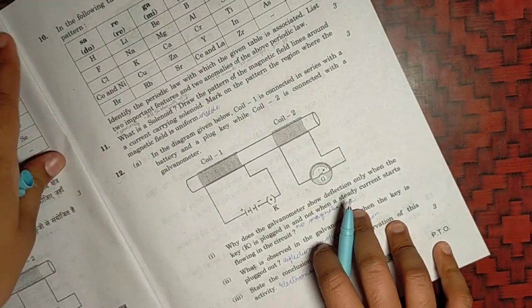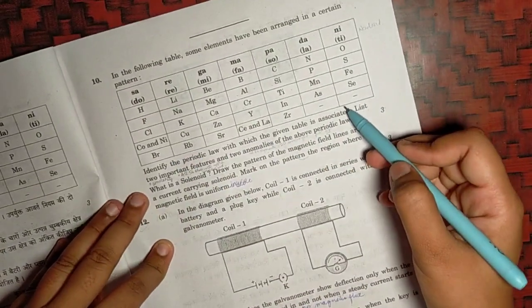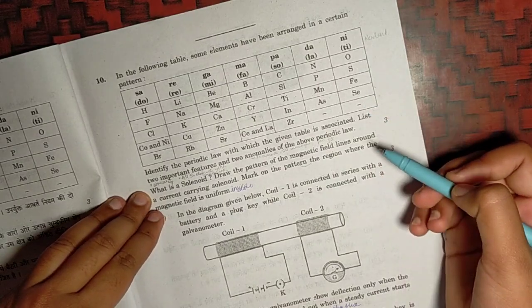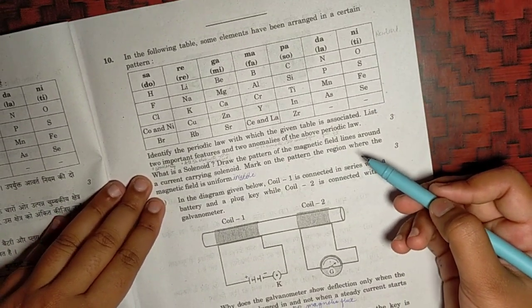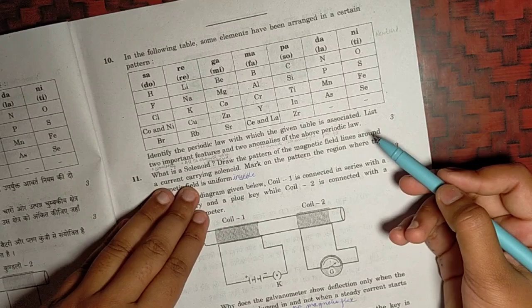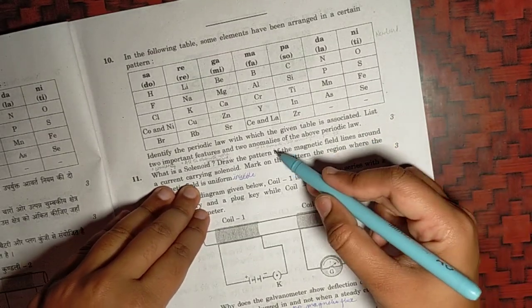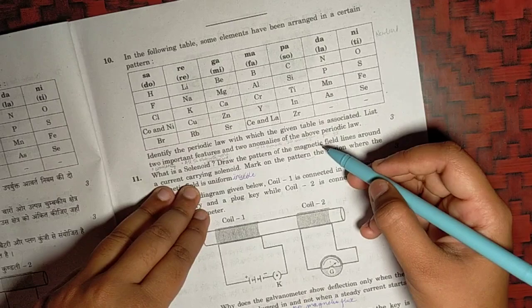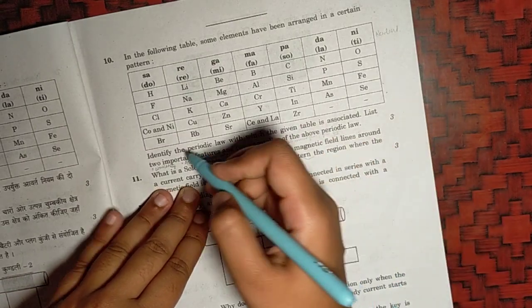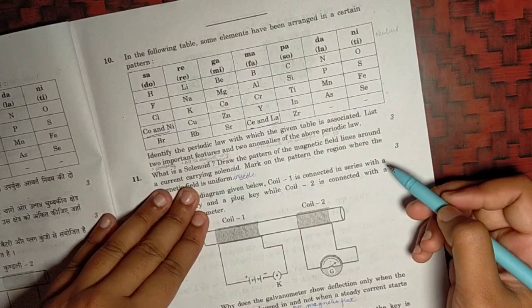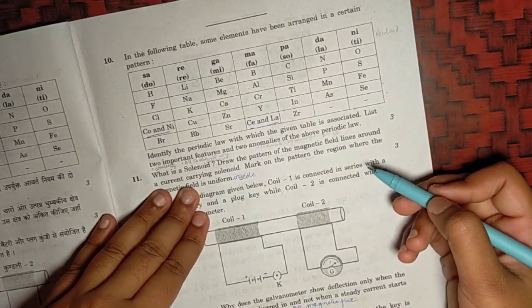For the tenth question, the periodic law here is Newland's Law of Octave. The two features are it shows the similarity of property of the eighth element with the first element, and it is easier to understand and shows a systematic study of elements. The anomalies are it is only applicable up to calcium. And some elements like cobalt and nickel, cerium and lanthanum were placed in the same group just to fit in the periodic table.